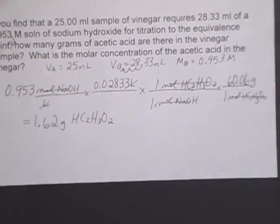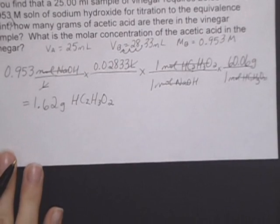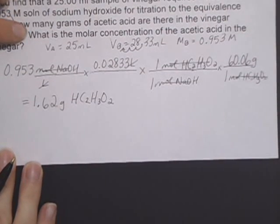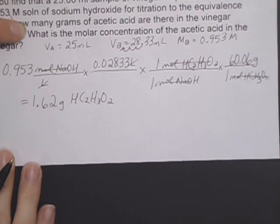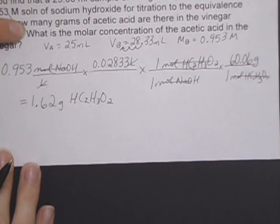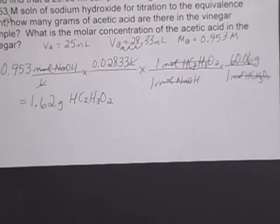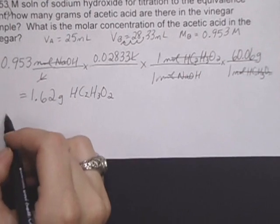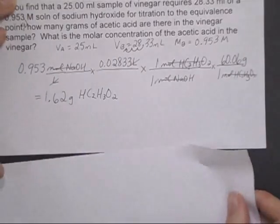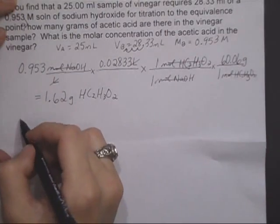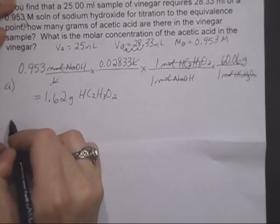That's the first part of the question. And then the last part of the question asks, what is the molar concentration of the acetic acid in the vinegar? So for me to do that, I actually have to kind of go backwards. Let me get another piece of paper down here on the bottom so we can see it. So that's part A, part B.